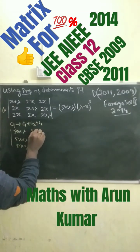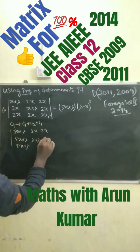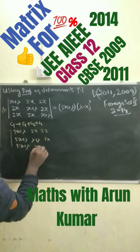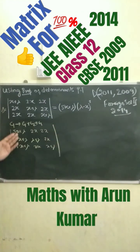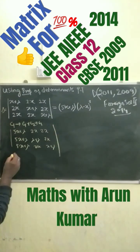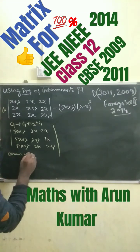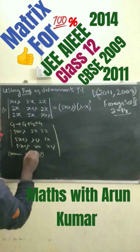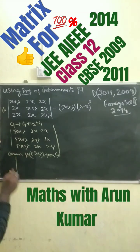For the remaining entries, we get 2x, 2x, and x plus lambda in the respective positions. Now you can see 5x plus lambda is common, so we can take it out common from column 1.